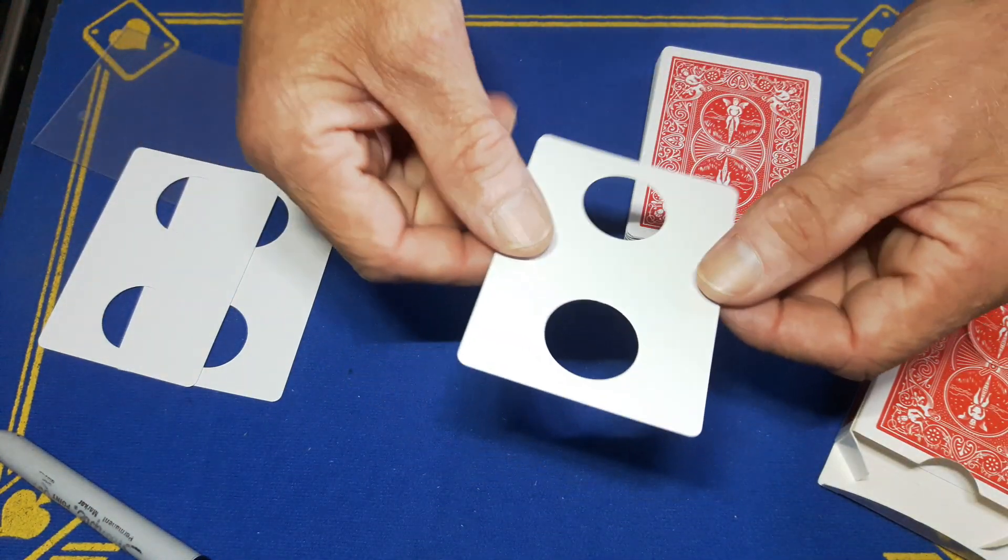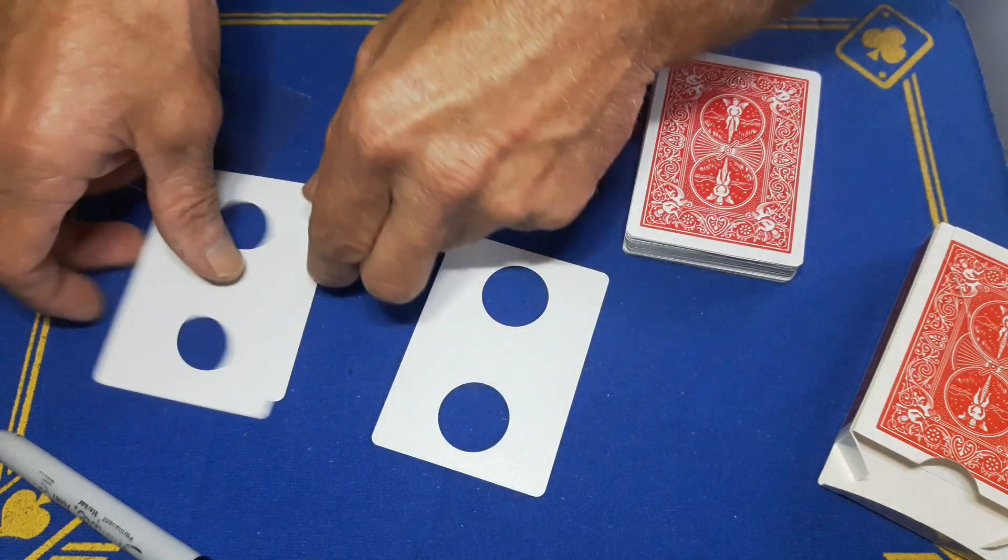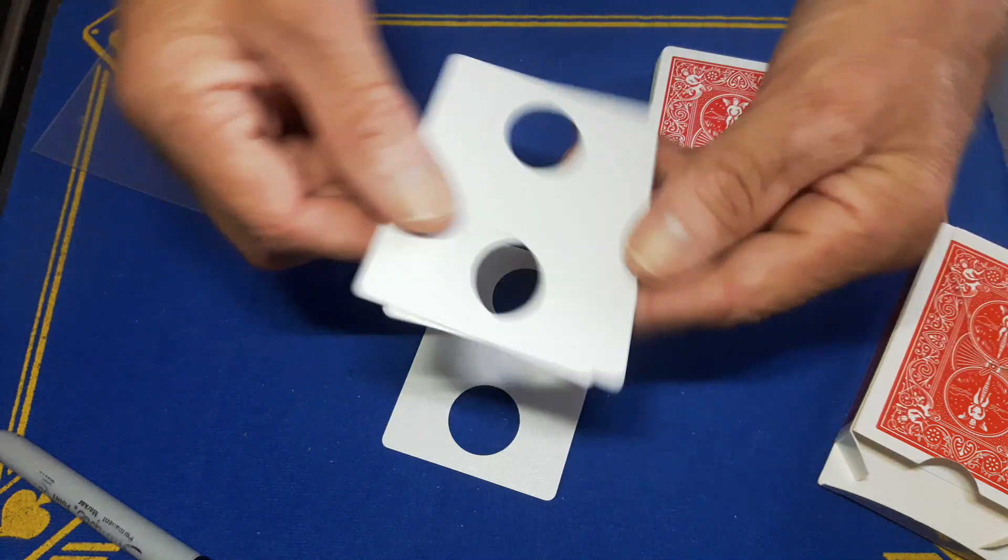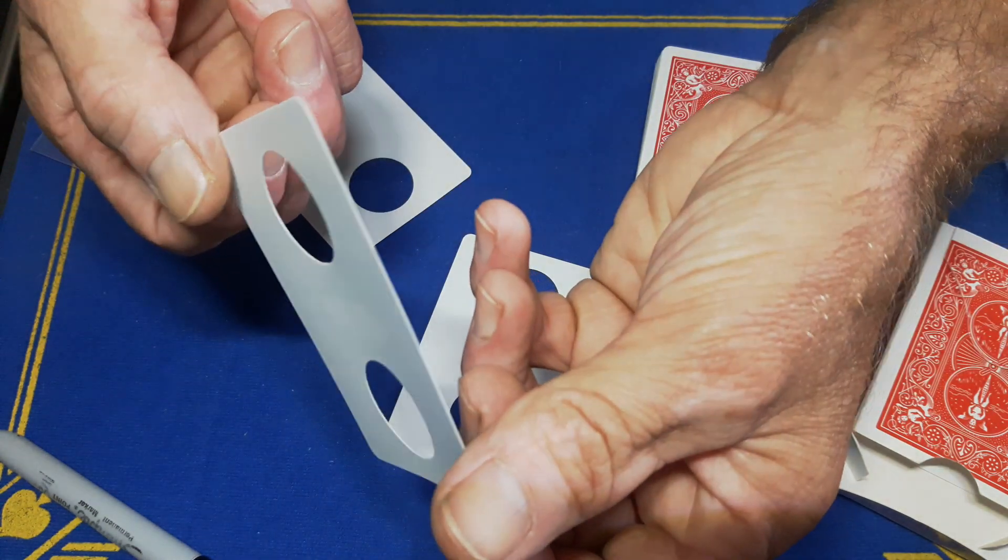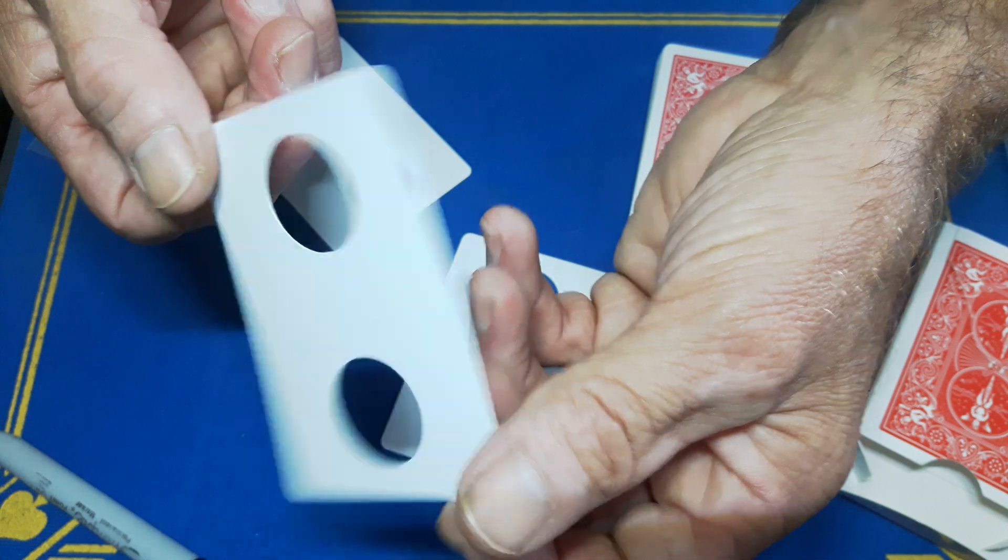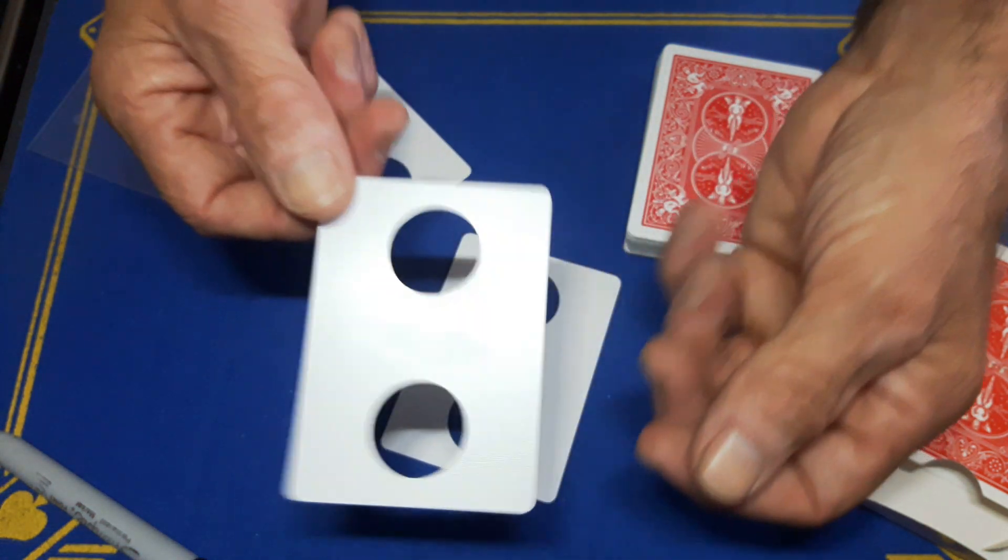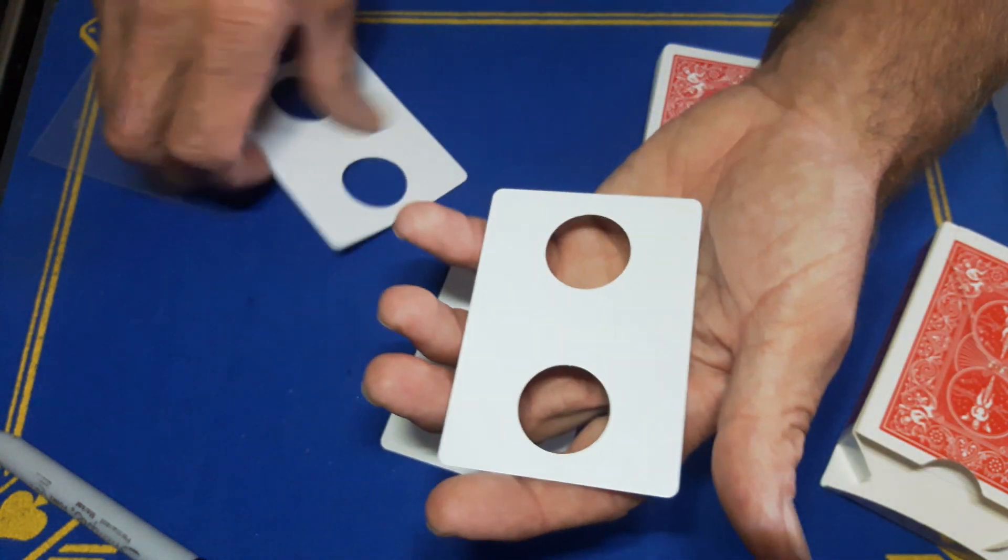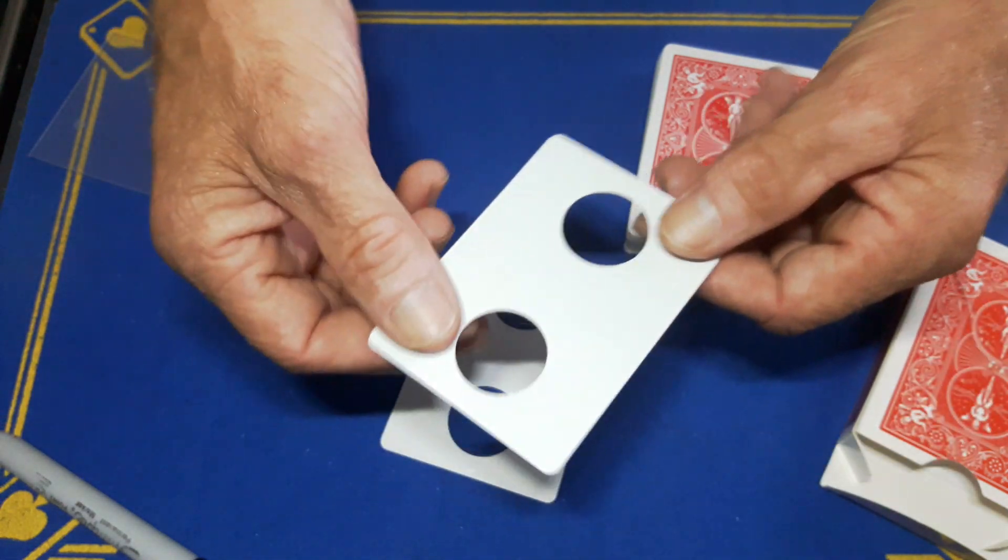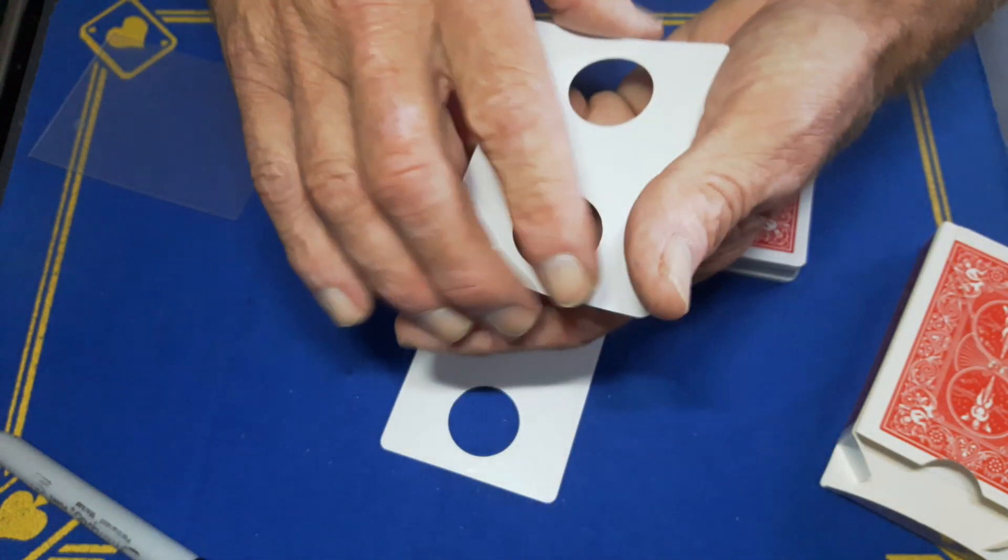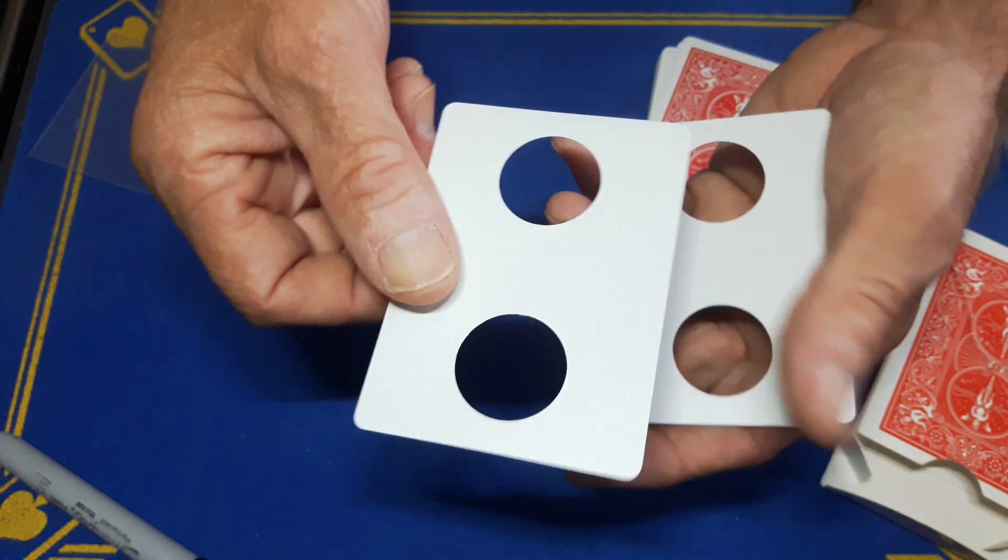You then have another blank card. Now this card here has a tiny bit of Photomount spray just in the middle. I don't know if you can just about see it there. I like Photomount spray, it's completely invisible compared to double stick tape, but there's only a little bit there so these cards will stay together as one but I can easily separate them.